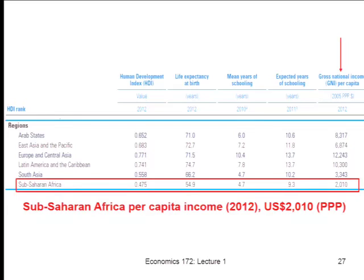Mean years of schooling, the way the UNDP puts it together, is average years of schooling for adults 25 and above in that country. That tells you about past educational investments and the educational characteristics of the current workforce. Expected years of schooling looks at current enrollment among school-age kids and asks: if these exact trends continue, how much education will the next generation have? That's the way to think about it.